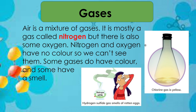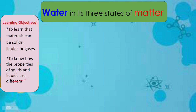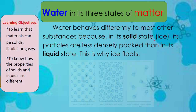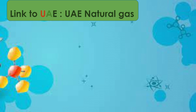We learned that materials can be solids, liquids, or gases. Let's understand how water in its three states of matter behaves. Water behaves differently from most other substances because in its solid state — ice — its particles are less densely packed than in its liquid state. This is why ice floats. We can see water molecules in solid ice, water molecules in liquid water, and water vapor in the gas state.